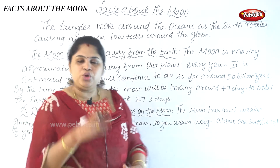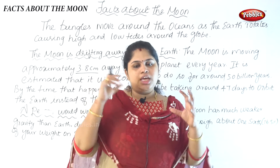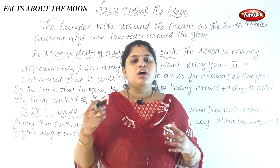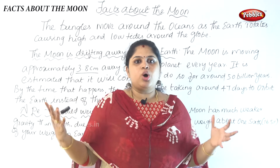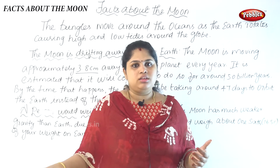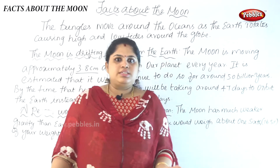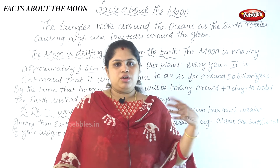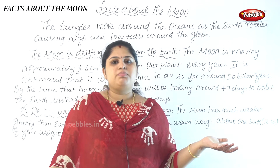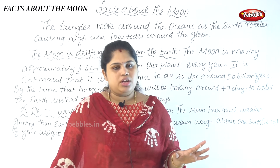For each planet in our solar system, we will not have the same weight as on earth. For example, if I weigh 65 kg on earth and go to any other different planet, I will not have the same weight.